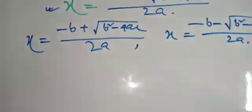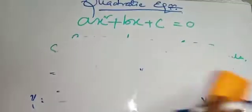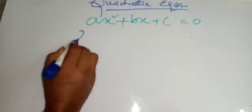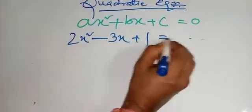Now, I am giving one example. That is, 2x square minus 3x plus 1 equal to 0.